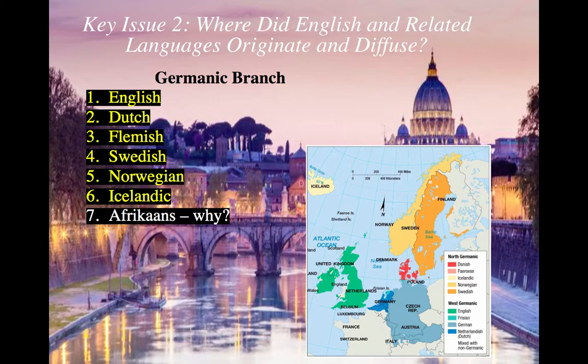English is obviously part of the Germanic branch, but so are Dutch, Flemish, Swedish, Norwegian, and Icelandic — we all have a common ancestral group. So is Afrikaans, which is a language mostly in South Africa and other parts of Southern Africa. Remember, it's part of that ancestral group. Consider who invaded that part of the globe — the Dutch originally, and then the English came in later. You combine all those languages and you get Afrikaans, part of that branch of the common ancestral group.